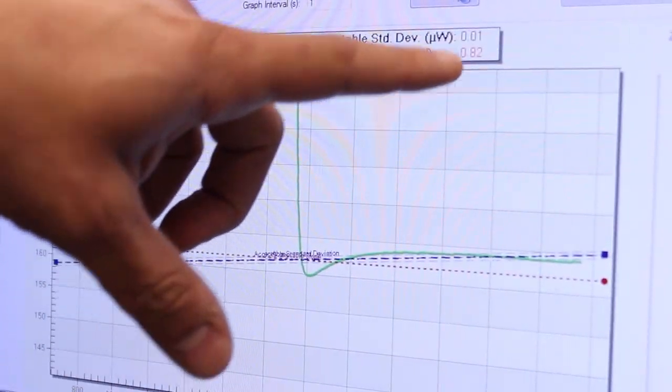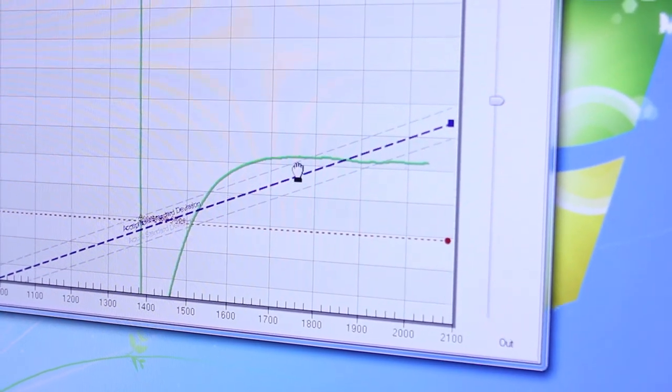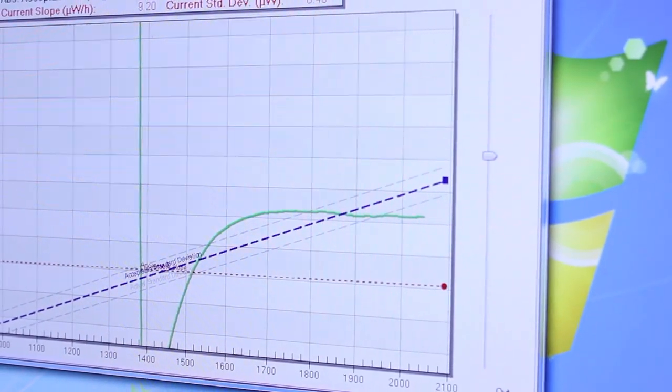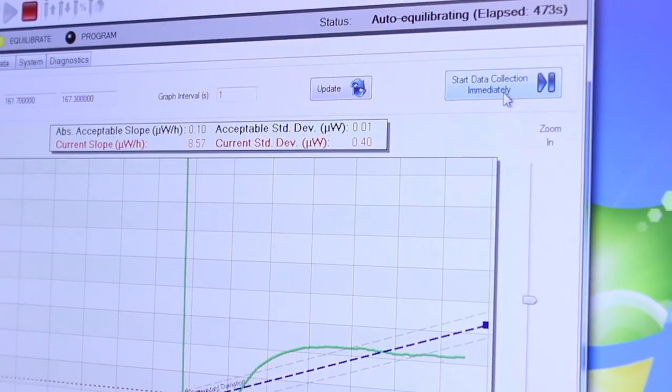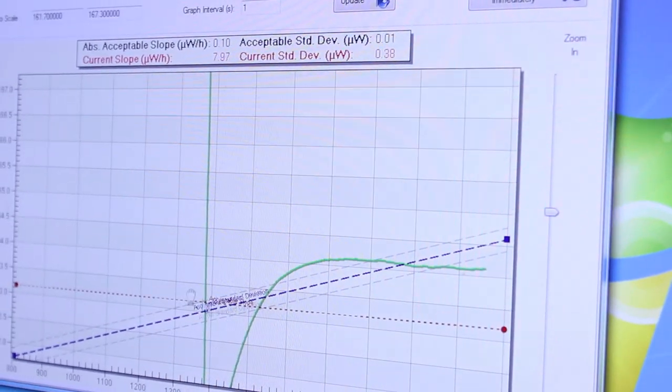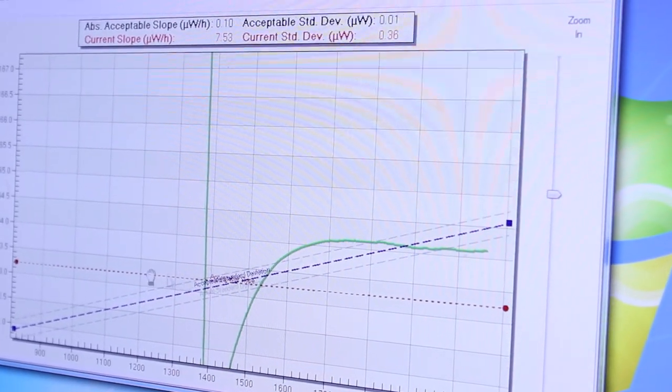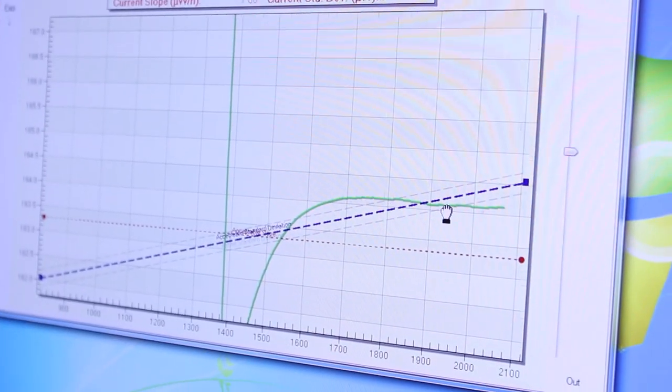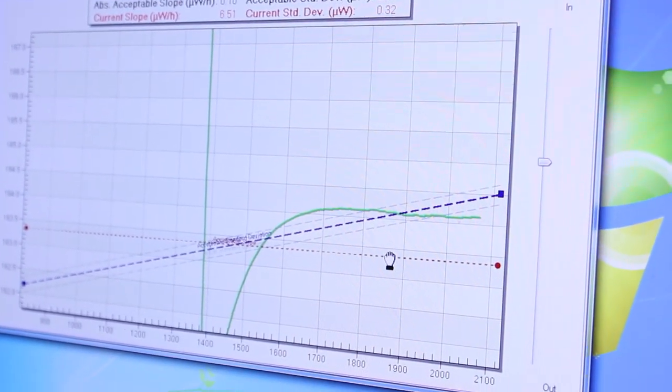Likewise with the standard deviation if at any point you want to override the auto equilibration you can always do so by clicking on the start data collection immediately otherwise you can just wait for the auto equilibration to proceed normally and when the baselines actual observed slope and deviation become within the acceptable ranges the experiment will automatically start.